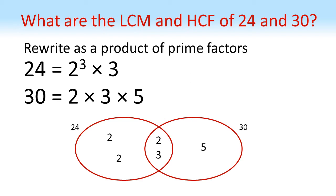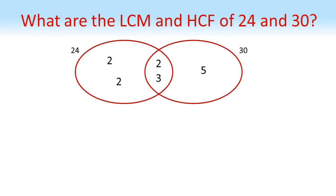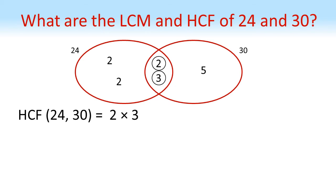We can now use the Venn diagram to work out the highest common factor and lowest common multiple. For the highest common factor, the shared prime factors in the middle are 2 and 3, and their product is 6. So 6 is the highest common factor — the highest number that divides into both 24 and 30 without a remainder.